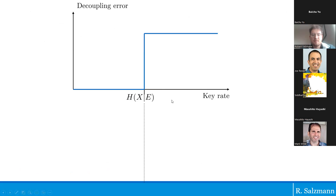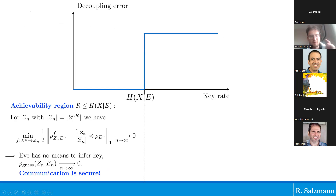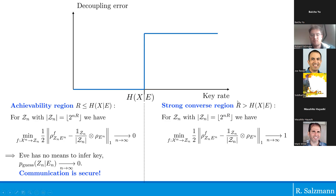If we plot the decoupling error over the key rate, there's a critical point — the conditional von Neumann entropy. Below it, if you try to distill keys below that rate, the decoupling error nicely decays to zero. In the strong converse region above the conditional von Neumann entropy, there's a discontinuity: the decoupling error goes to one exponentially fast, as shown by our theorem.